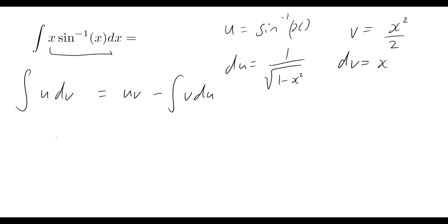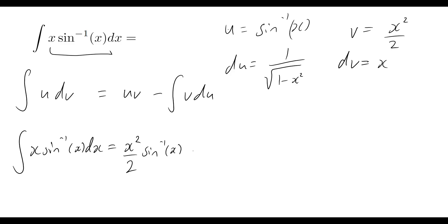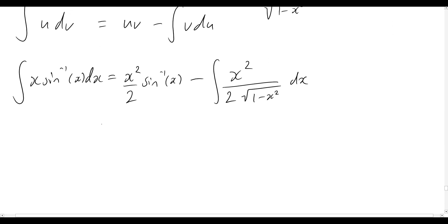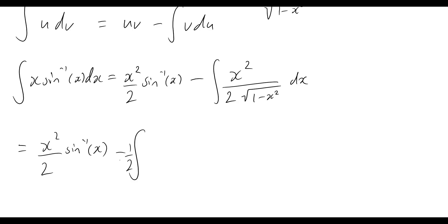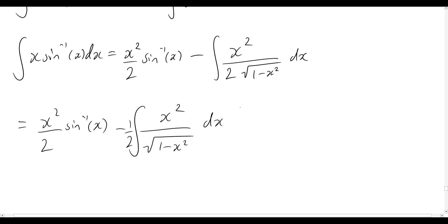So our problem will now become: the integral of x sine inverse of x dx is equal to uv, which I'll write as x squared over two times sine inverse of x, minus the integral of v du — that is, x squared over two divided by the square root of one minus x squared. We can take out a factor of one half, giving us minus one half times the integral of x squared over the square root of one minus x squared dx.